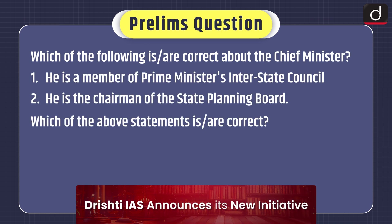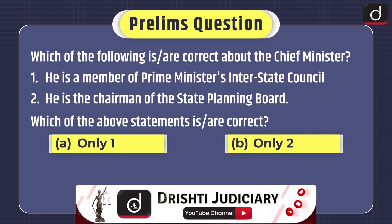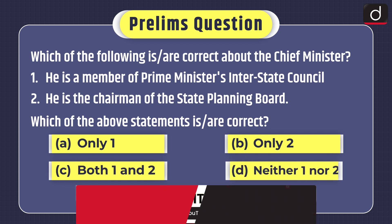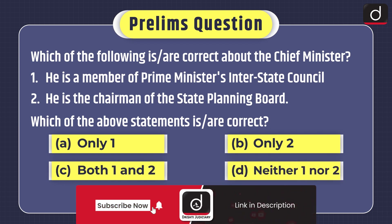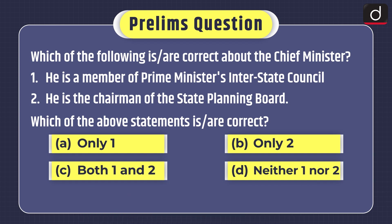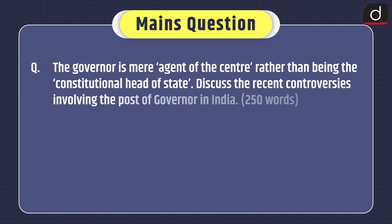Now it's time for practice questions. Prelims question: Which of the following is correct about the Chief Minister? One — he is a member of the Prime Minister's Interstate Council; Two — he is the chairman of the State Planning Board. Which of the above statements is correct: only one, only two, both one and two, or neither? You can send the answer in the comment section. Mains question: 'The Governor is merely an agent of the center rather than being the constitutional head of the state — discuss the recent controversies involving the post of Governor in India.' That's all for today, stay tuned for the next episode, thanks for watching.